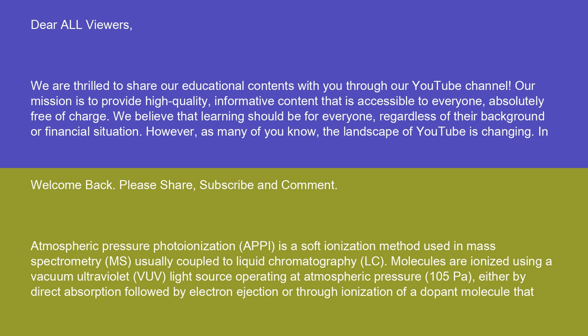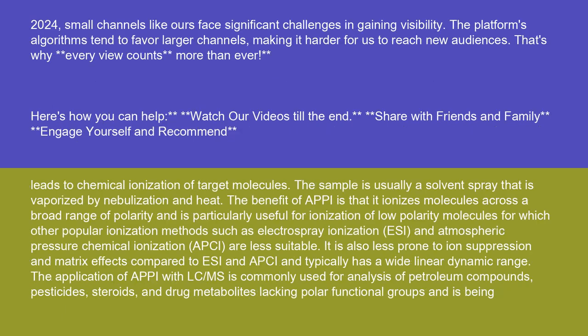Atmospheric pressure photoionization (APPI) is a soft ionization method used in mass spectrometry (MS), usually coupled to liquid chromatography (LC). Molecules are ionized using a vacuum ultraviolet (VUV) light source operating at atmospheric pressure (10^5 Pa), either by direct absorption followed by electron ejection or through ionization of a dopant molecule that leads to chemical ionization of target molecules.